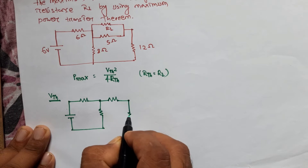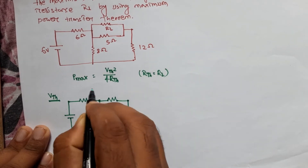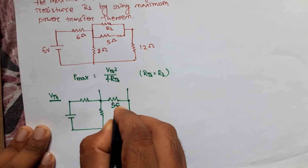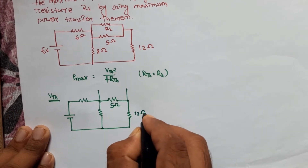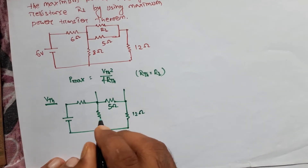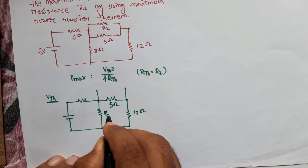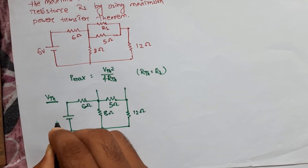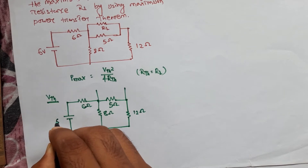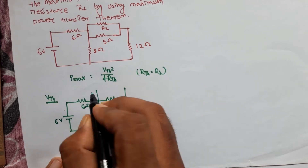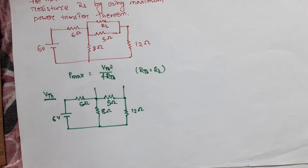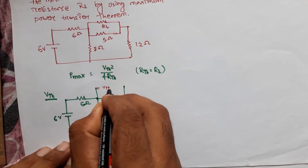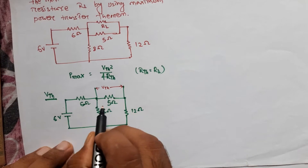With the load resistance open-circuited, the circuit remains the same. We have a 5Ω resistor, a 12Ω resistor, an 8Ω resistor, a 6Ω resistor, and a 6V voltage source. We need to find the value of Vth.